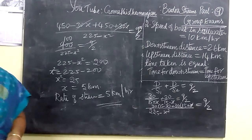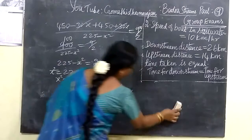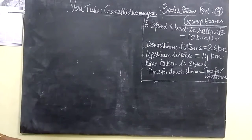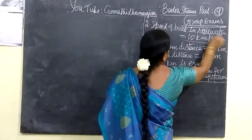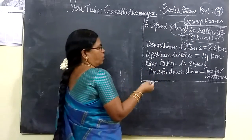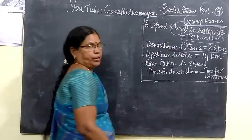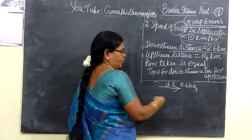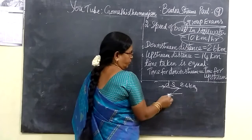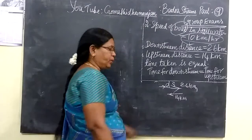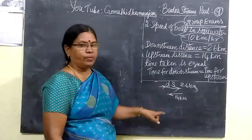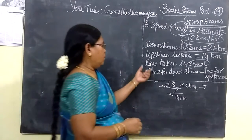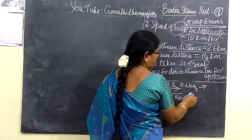This is a very easy problem. We will see the next one. The next question: the speed of the boat in still water is given as 10 km per hour. Downstream distance is equal to 26 km. The boat is travelling downstream 26 km, then coming back upstream it travels only 14 km. The time taken for both is equal. We have to find the speed of the stream.